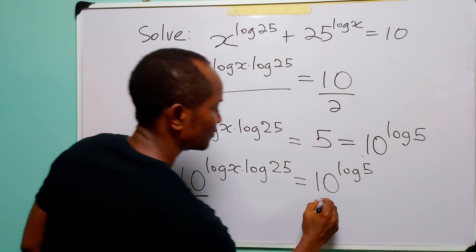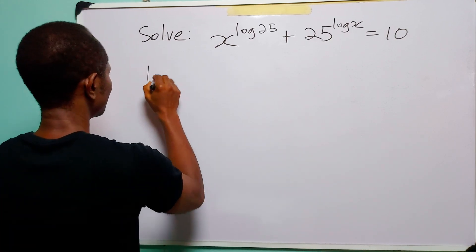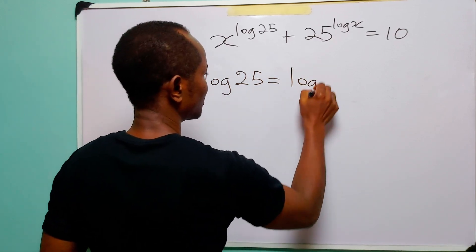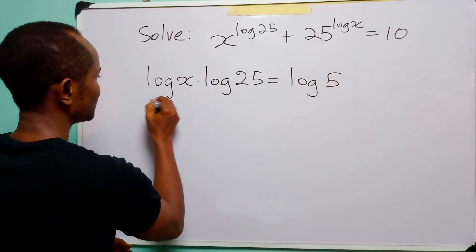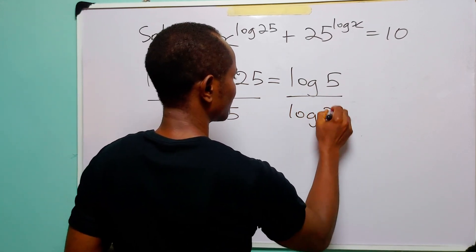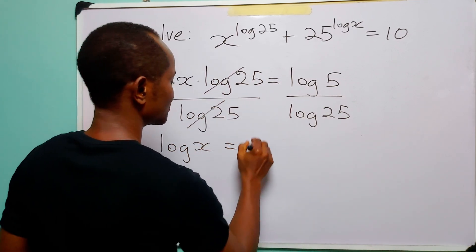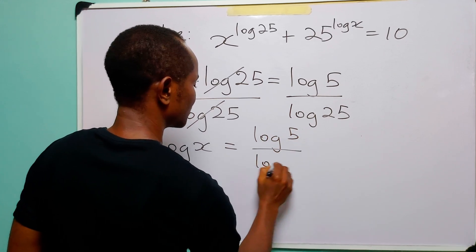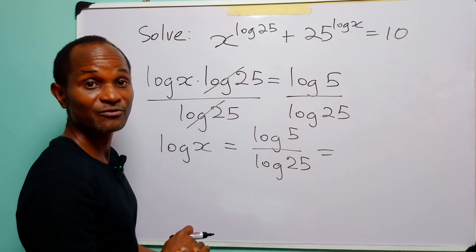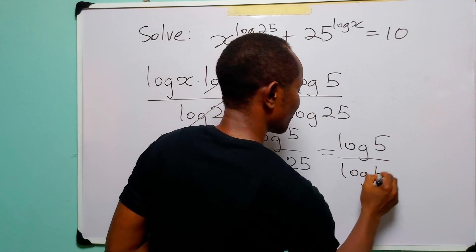We have 10 here on both sides, so we can equate the exponents. When we do that, we have that log x multiplied by log 25 is equal to log 5. We can divide both sides by log 25, which cancels, giving us log x is equal to log 5 over log 25. Let us remember that 25 is 5 to the power 2, so this is log 5 divided by log 5 squared.